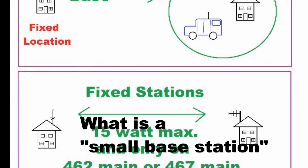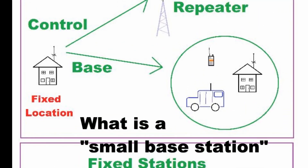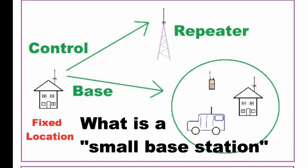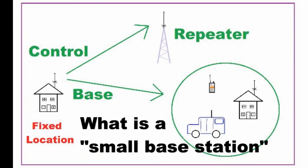You may have read in the rules about something called a small base station. If you have, you were reading the old rules — the ones before 2017. A small base station does not exist anymore. They changed the rules but never took that term out, so it actually didn't mean anything.